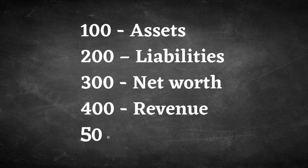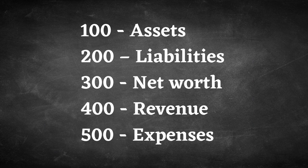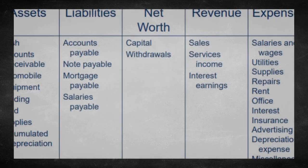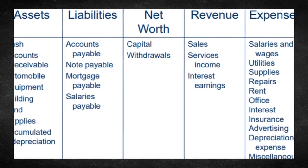Inside the chart of accounts could include the following: assets, liabilities, net worth, revenue, and expenses. If you are using accounting software, you will see numbers before the account names — 100 for assets, 200 for liabilities, 300 for net worth, 400 for revenue, and 500 for expenses. These numbers help you determine the correct account category.